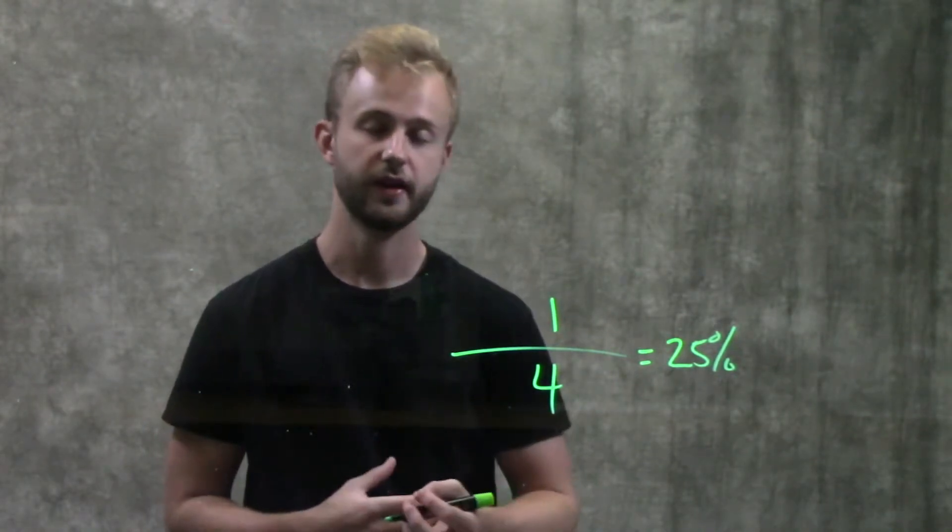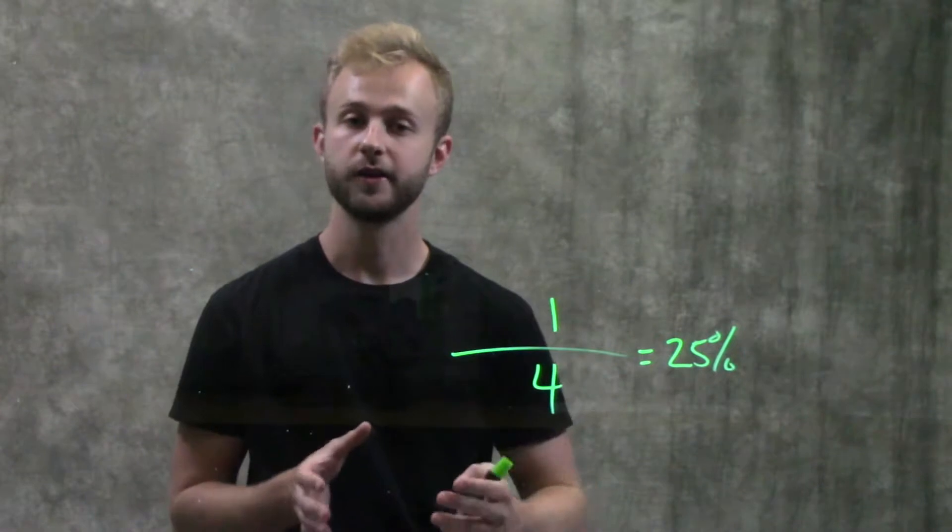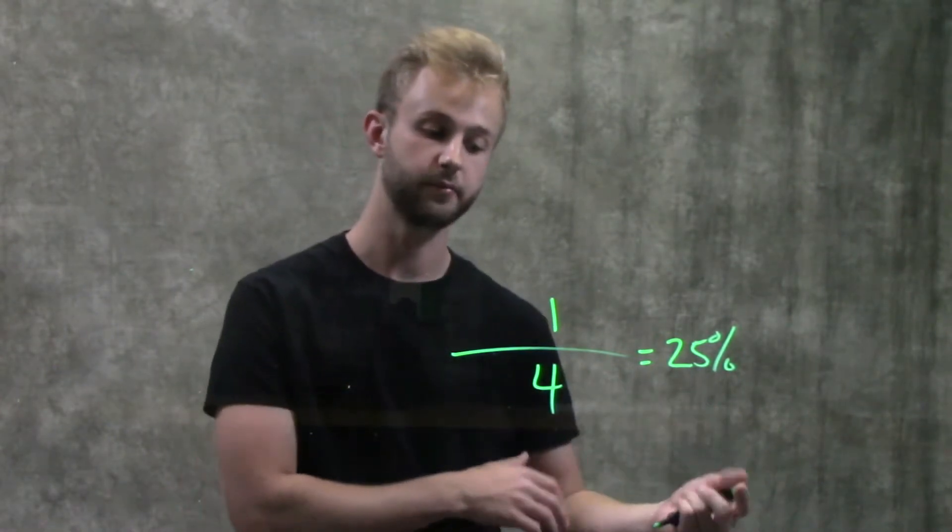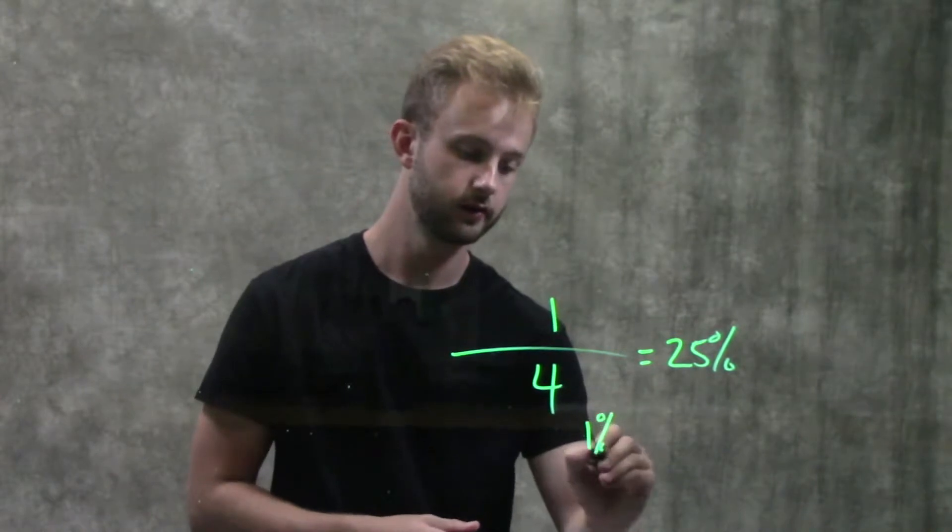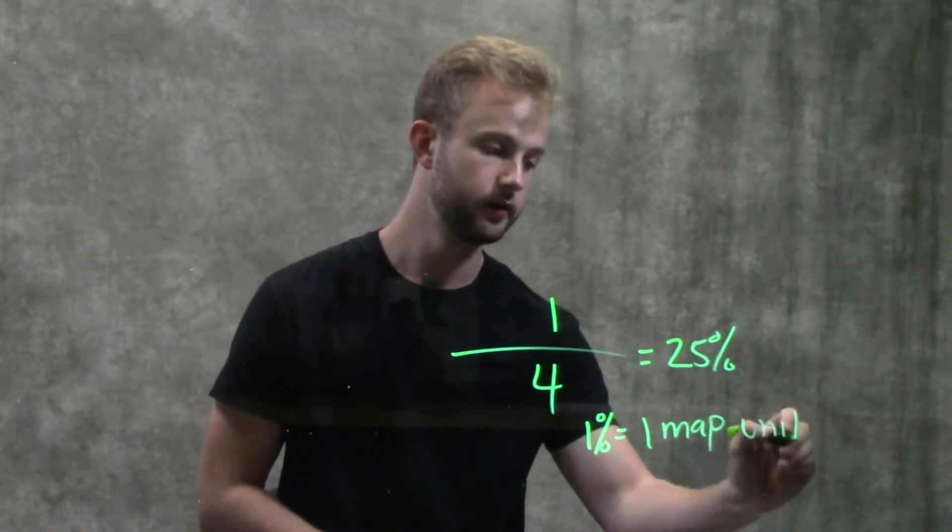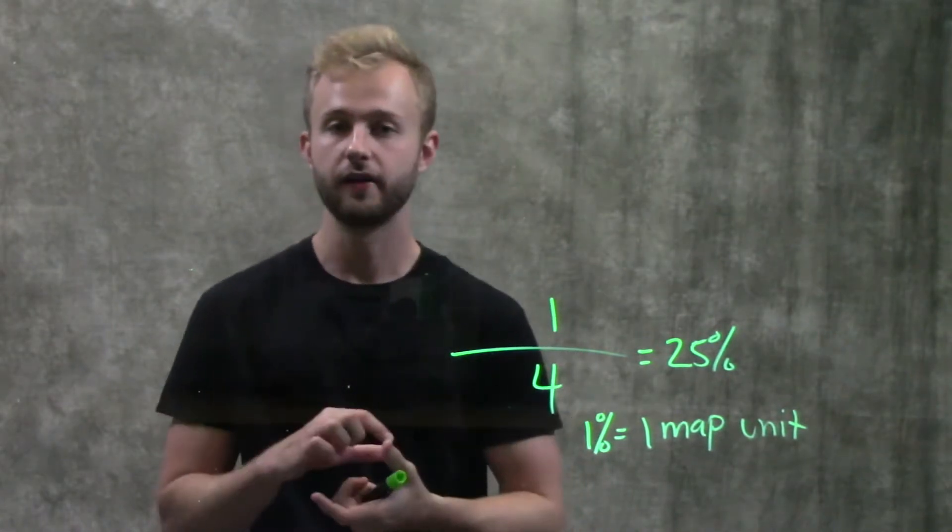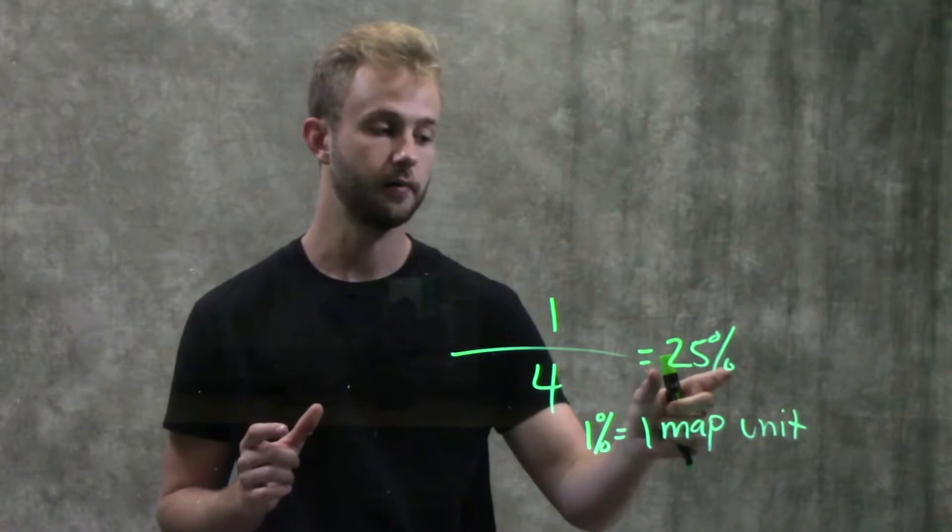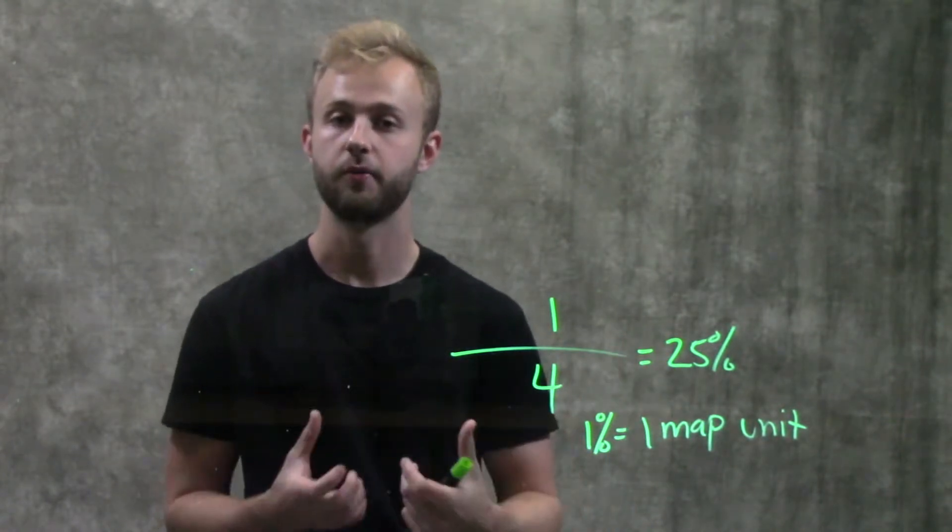We also know that 1% recombination is equal to one map unit. So we can say that whatever crossing over occurred between these two genes, they are about 25 map units apart from one another.